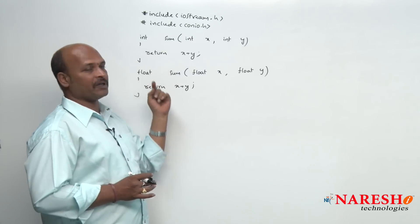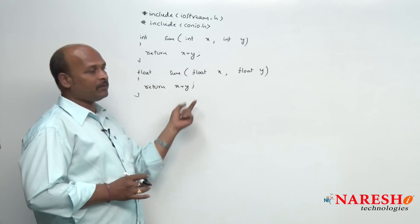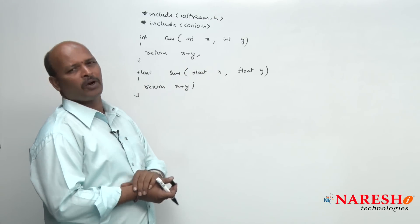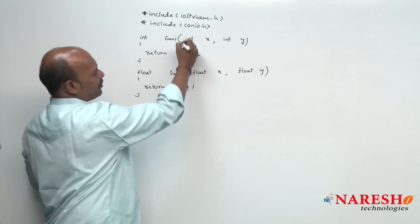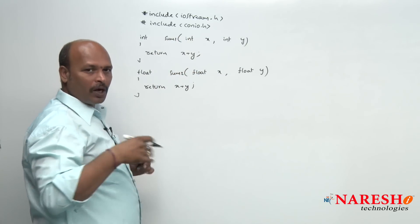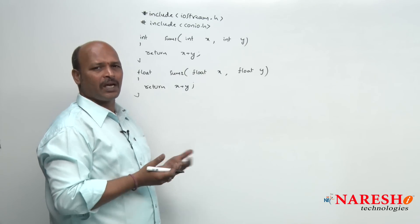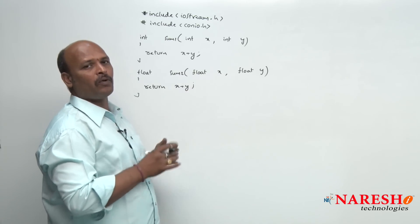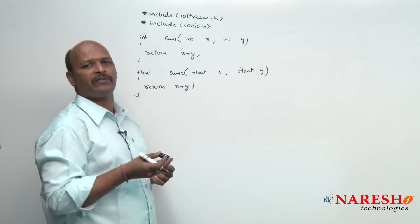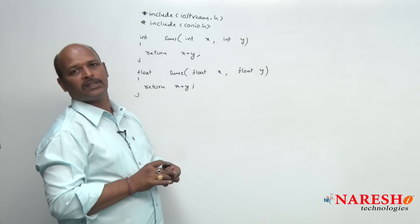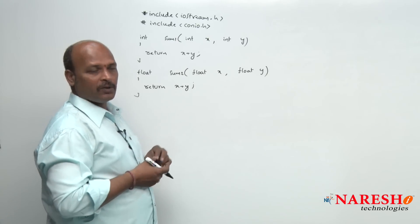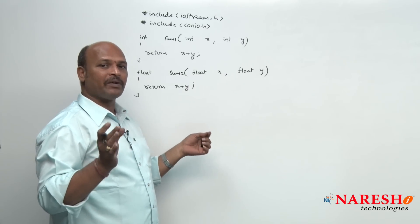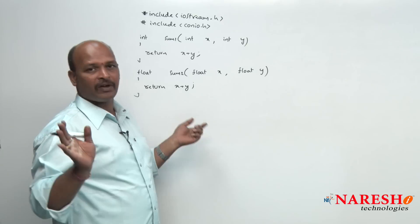That means we are creating several functions with the same name by changing the arguments — this is called function overloading. For example, with sum1 and sum2 as different names, the program is still performing integer sum and float sum. With function overloading, we are extending the functionality of functions, using the same function name for different purposes.